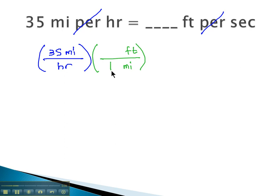And off of a conversion chart, we'll see one mile is 5,280 feet. And now the miles divide out, leaving just the feet that we're looking for. We still don't like the hours, though.